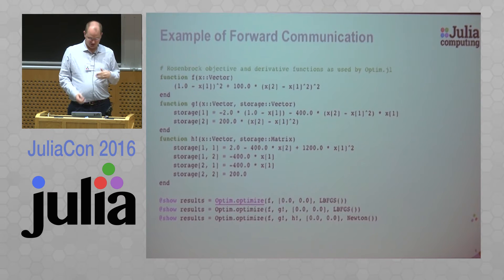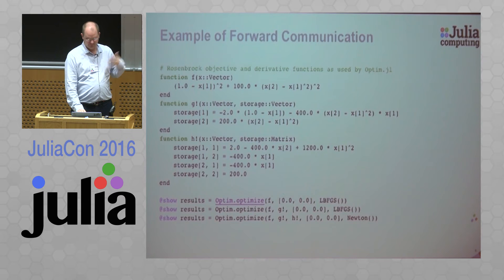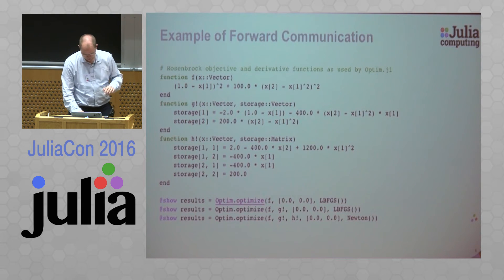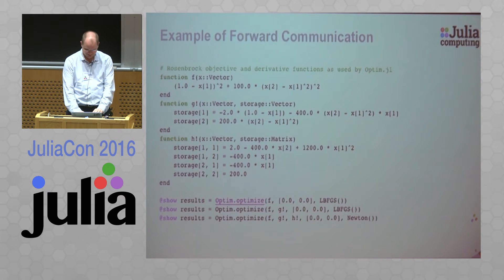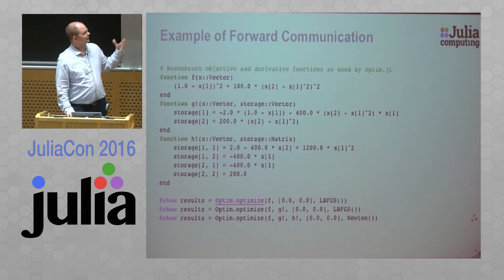Here's an example of a forward communication solver in Julia, from the Optim package. You can see the function signature that gets executed within Optim — it has a particular signature that was expected. I won't be able to show you the source code from here because the presentation mode is slightly different, but Optim expects its objective function to have some particular signature.